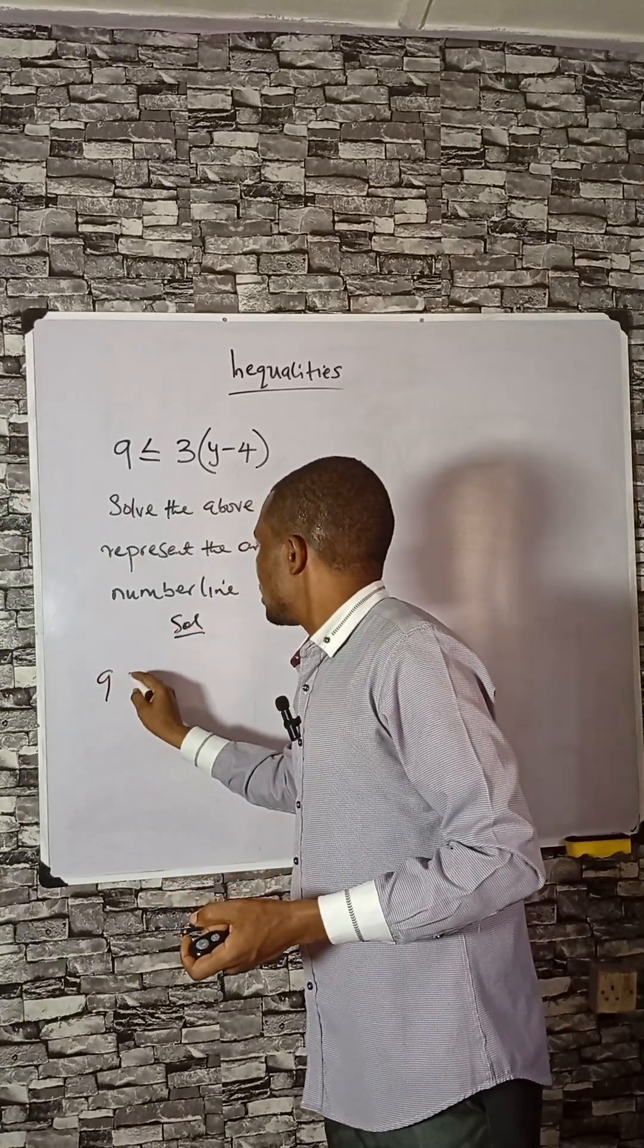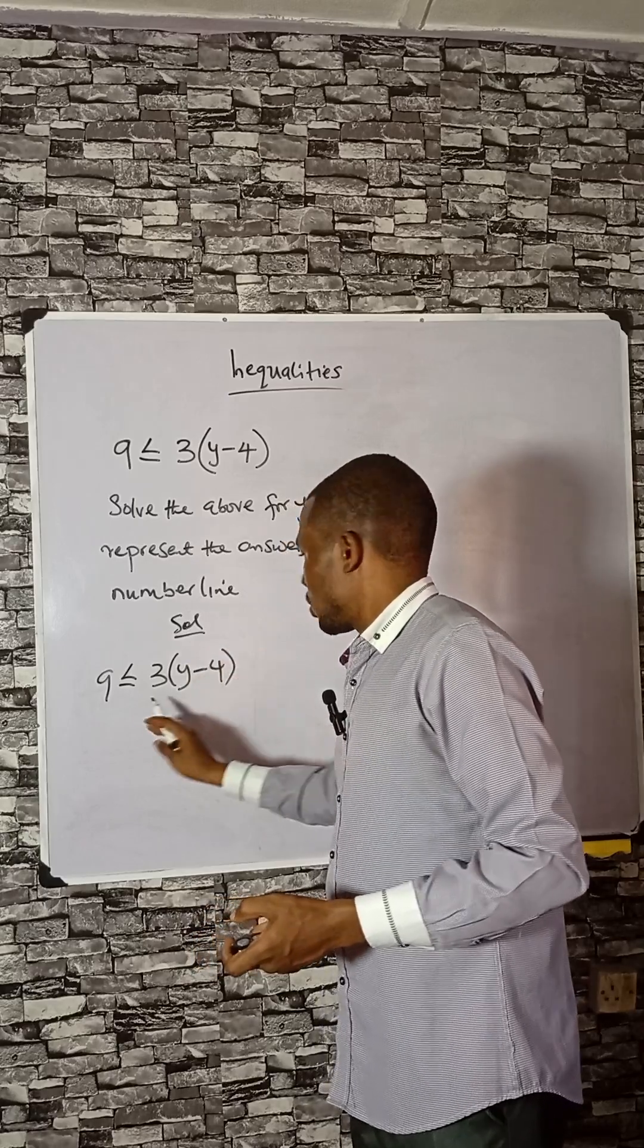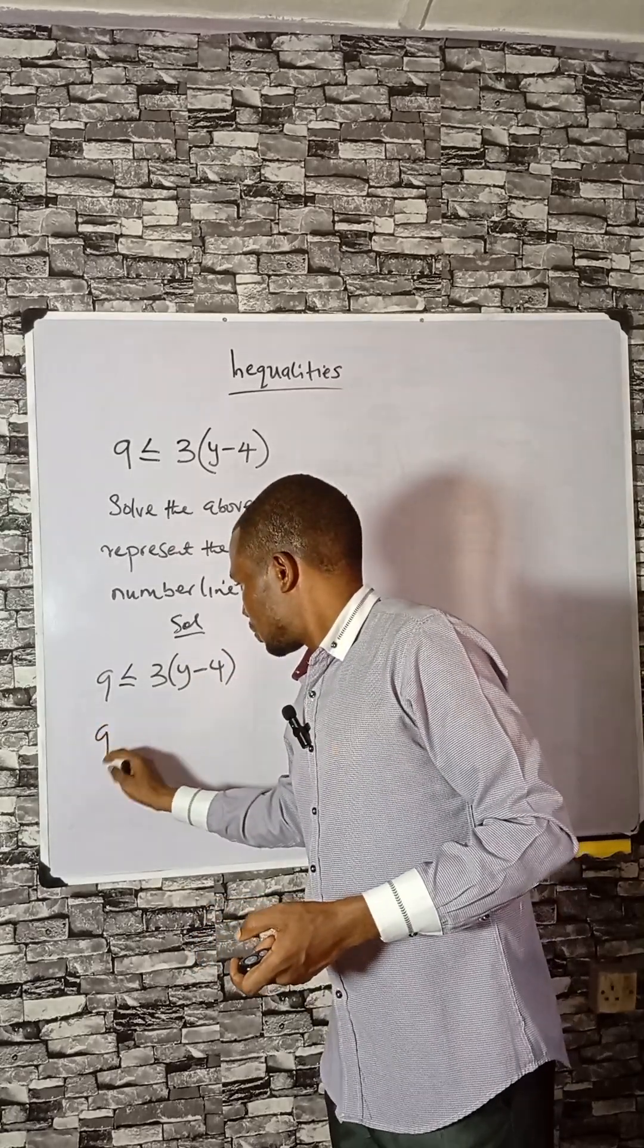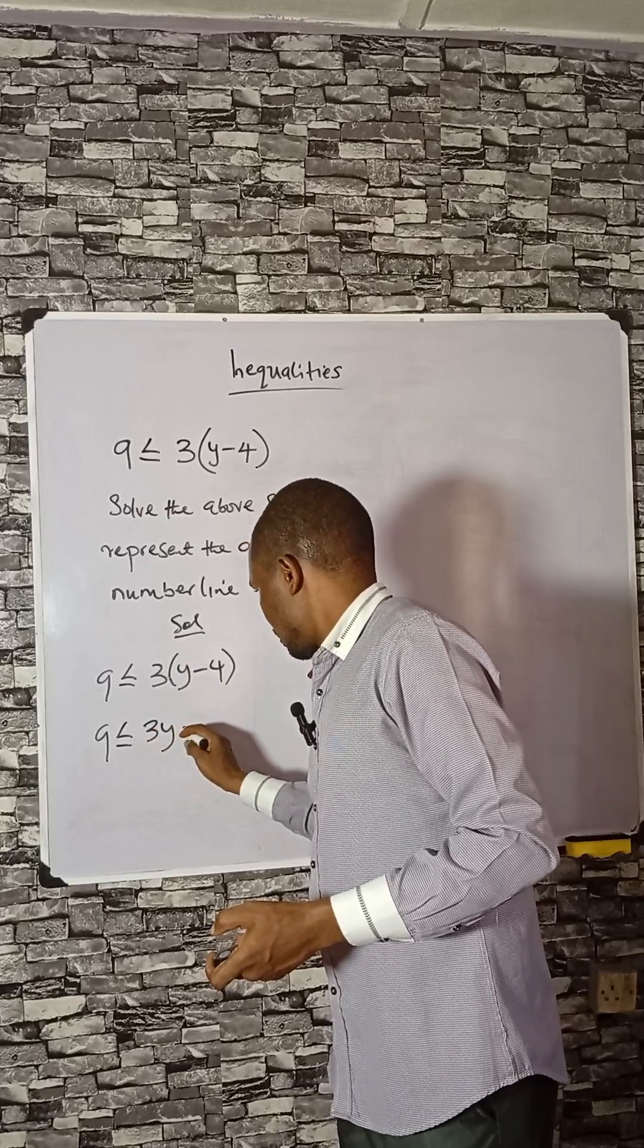So 9 is less than or equal to this. Expand the bracket. 3 times this is 3y minus 12.